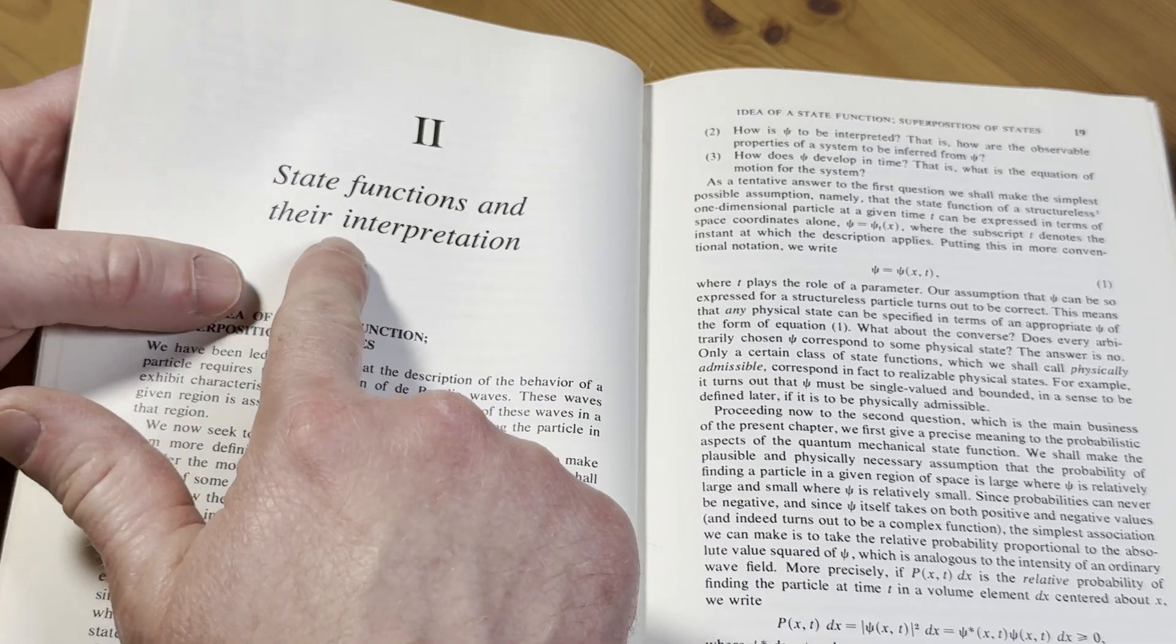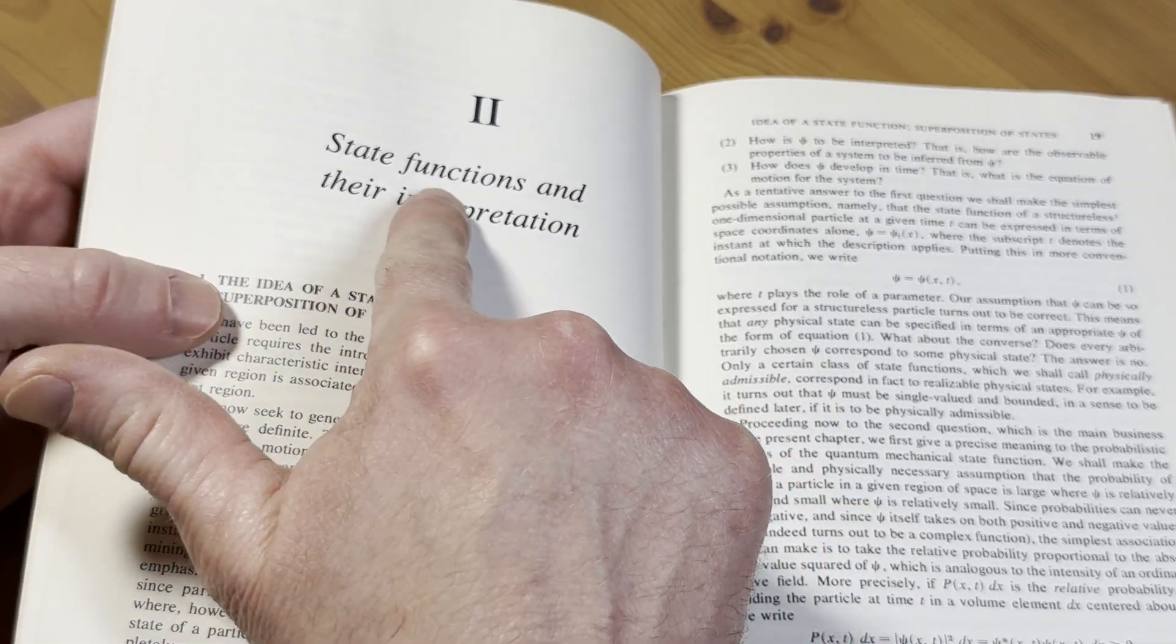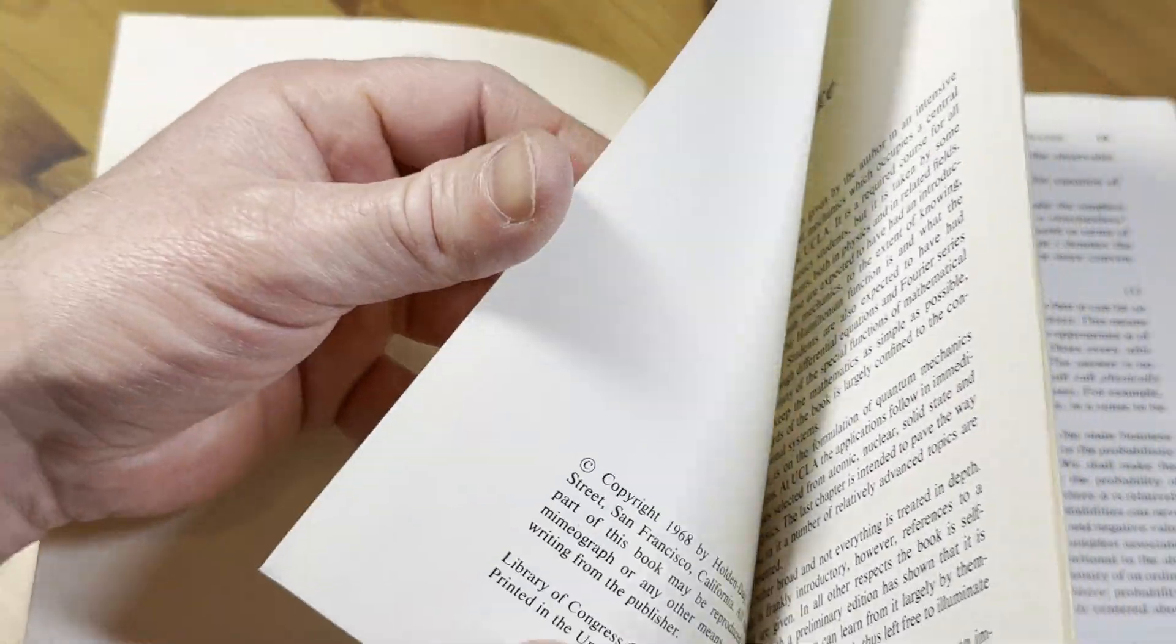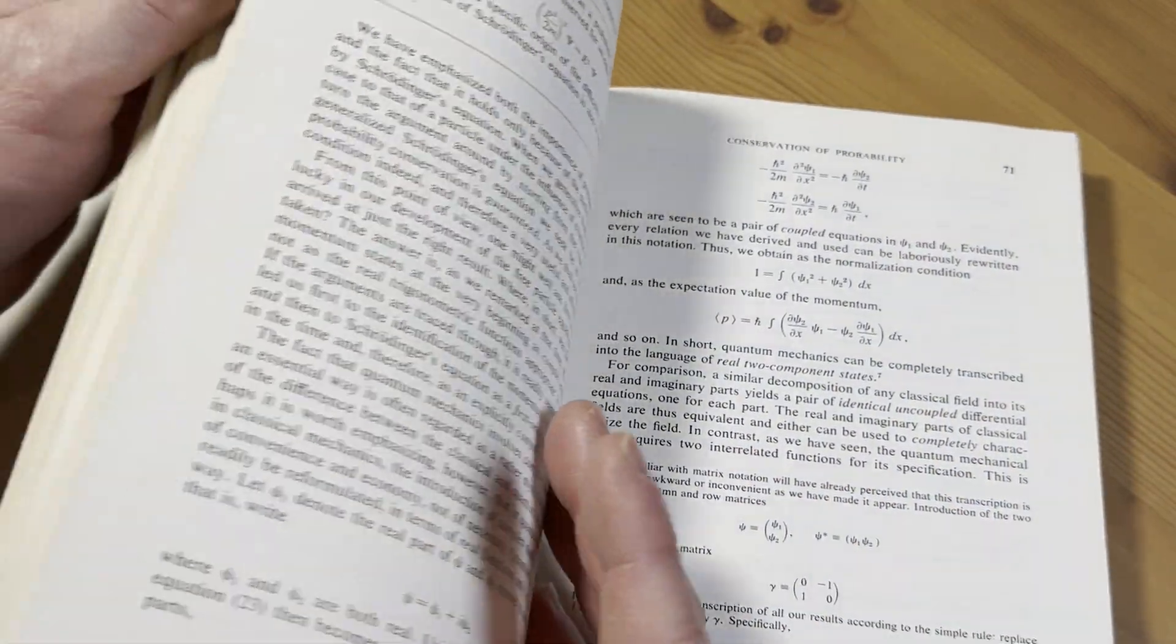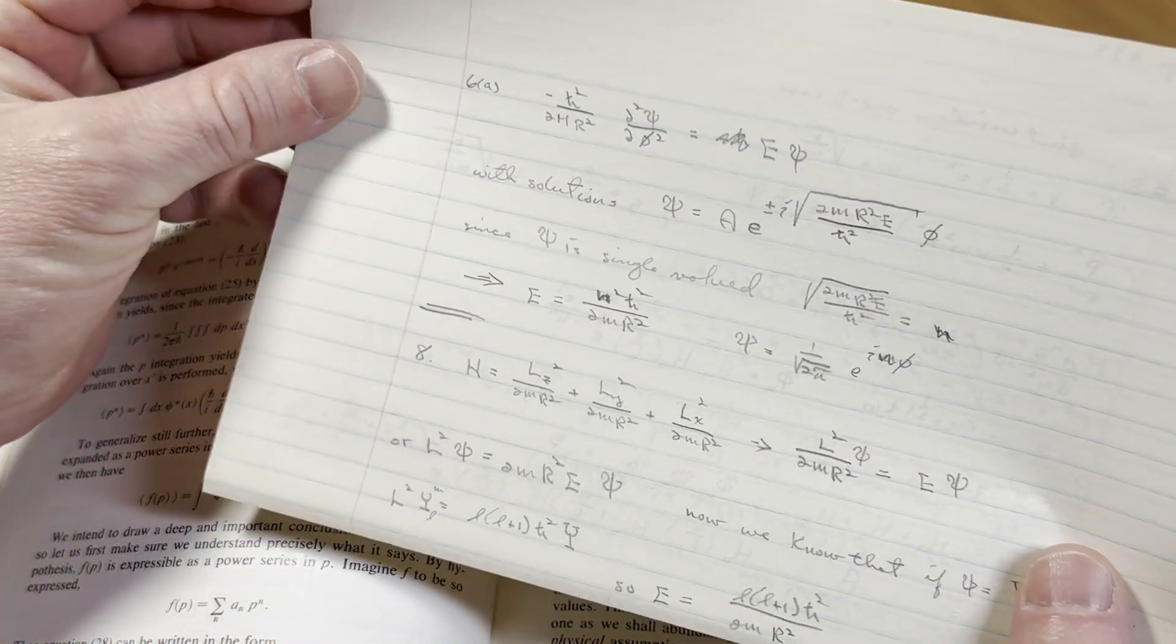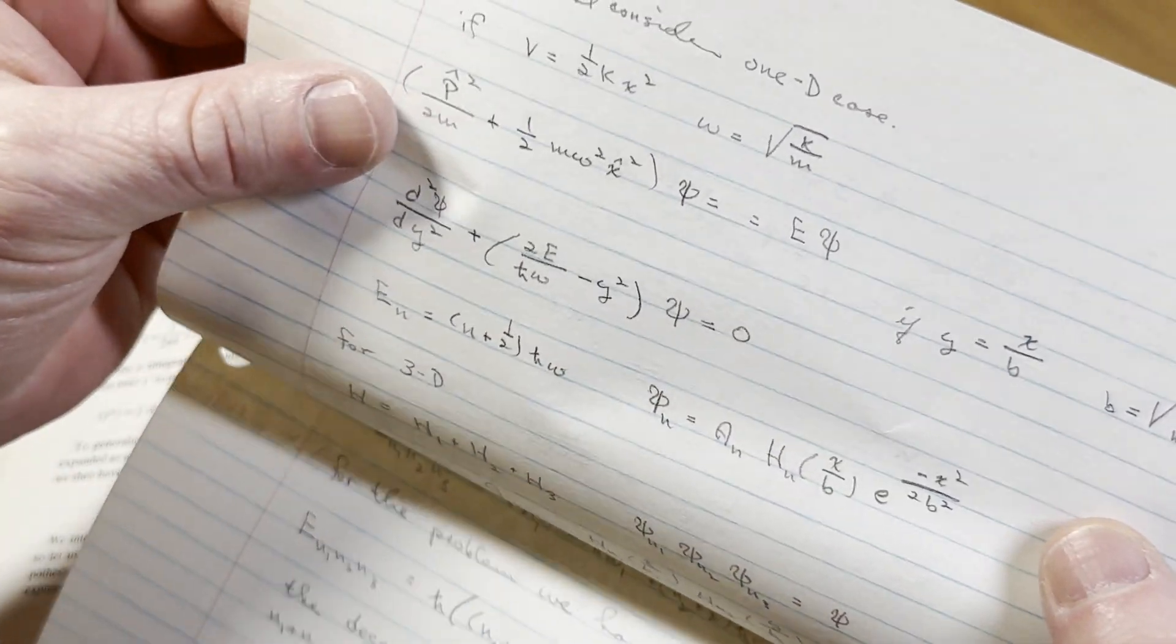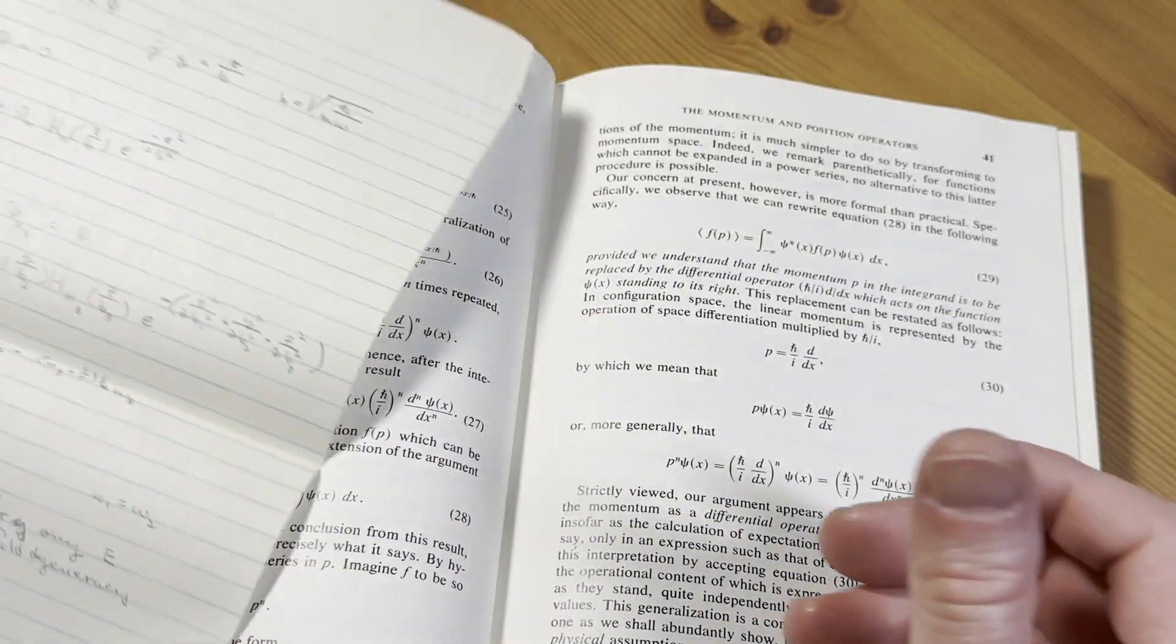Something else peculiar about this book. Look at this. State functions and their interpretation, right? Notice how it's not capitalized. Isn't that weird? And over here, this is really weird. I don't know why they did that. Or he did it. Here it's capitalized, right? It certainly draws your attention to the title, though. That's for sure. Ooh, what's this? Oh, we have discovered. Wow. Smells old. I wonder, I mean, this must be really old, right? What would say the copyright was on this? '67?